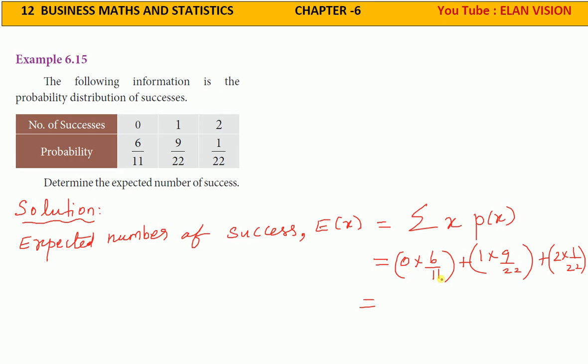0 multiplied with 6 by 11 is 0. 1 into 9 is 9 by 22, plus 2 into 1 by 22 is 2 by 22.